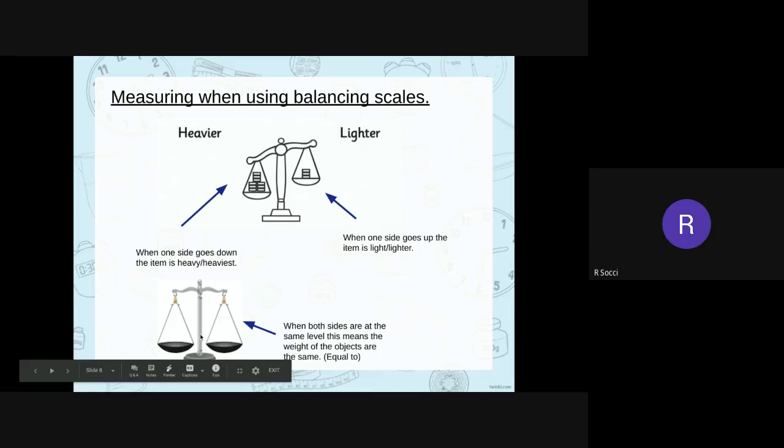You have a look here at the bottom, you've got a scale where it is the same. Okay, both sides are at the same level. Now, this scale has got nothing in at the minute. But if it did have something in, and the scales were the same level, it would mean that the weight of the objects are the same.